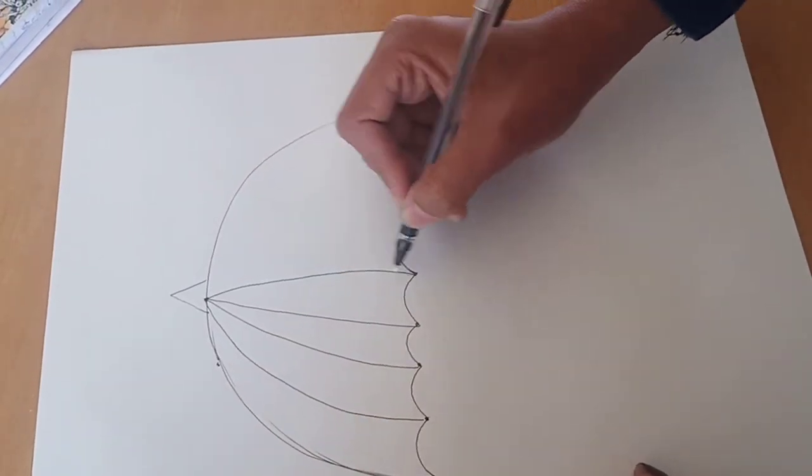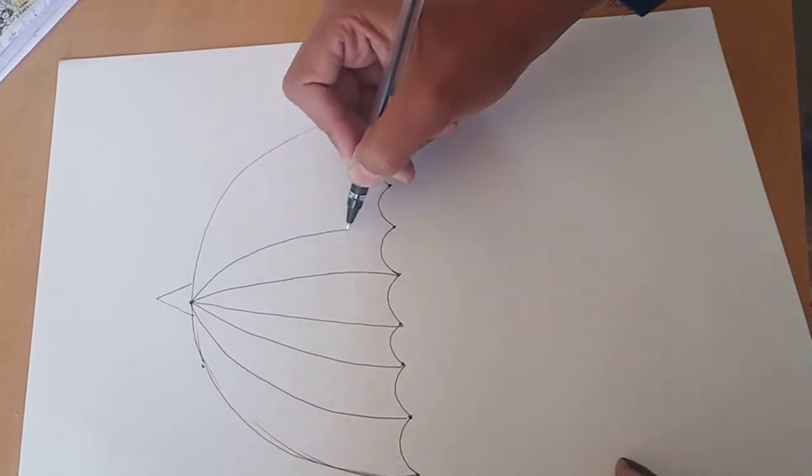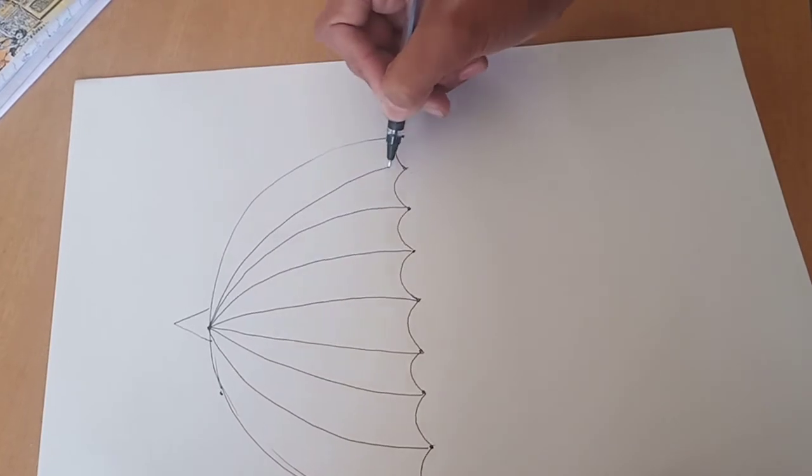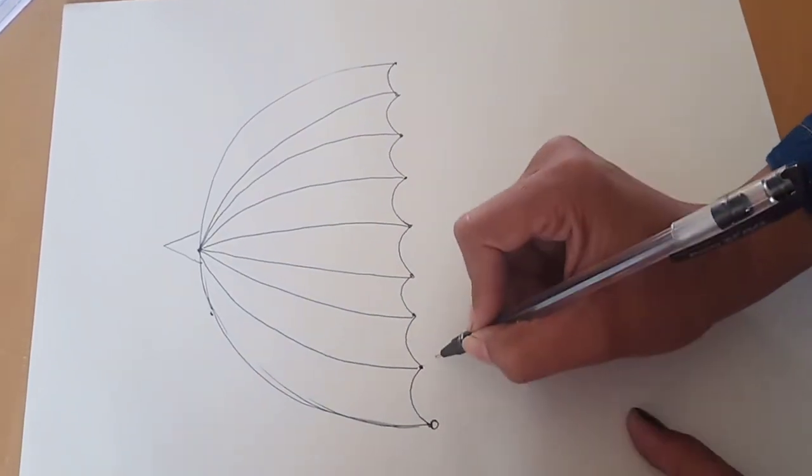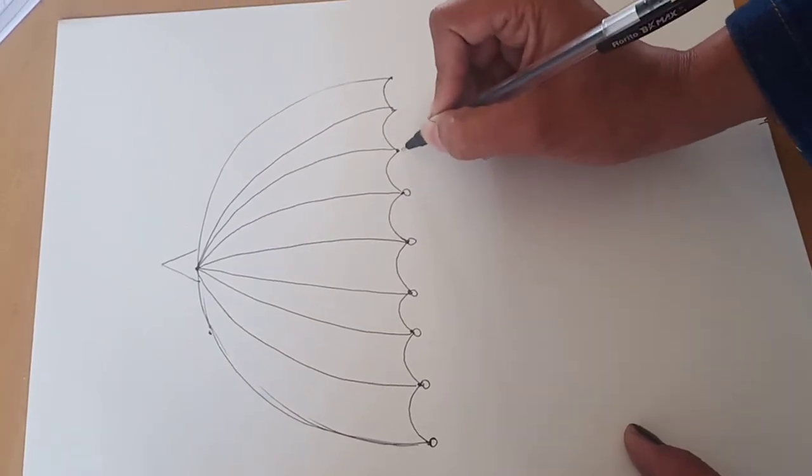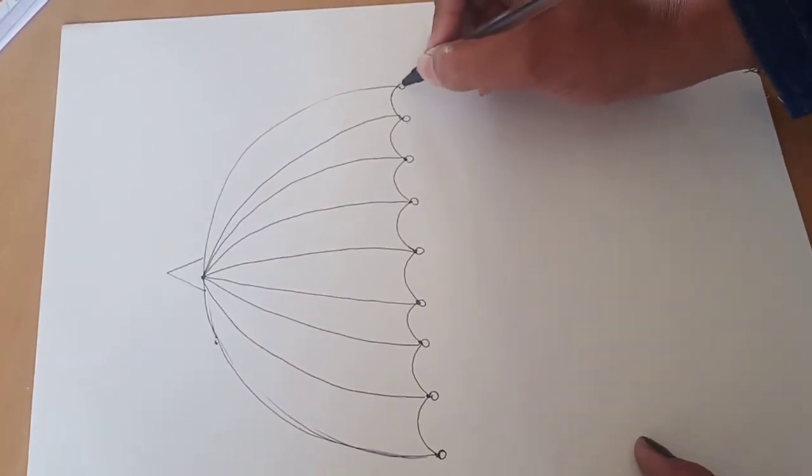Here you have to change the direction of your curve, so like this, and here I will draw small circles.